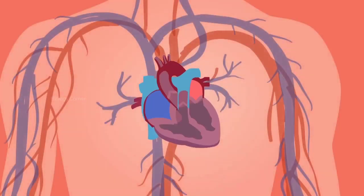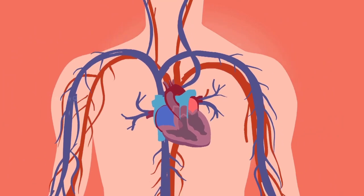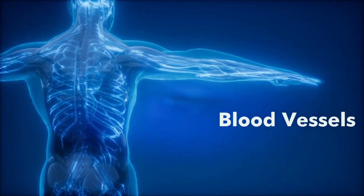The human circulatory system consists of three components: blood, blood vessels, and heart.